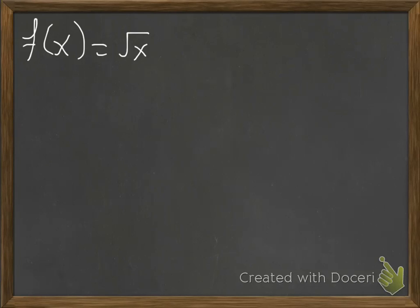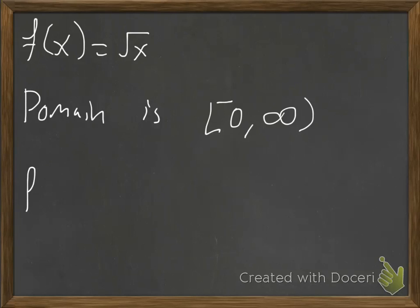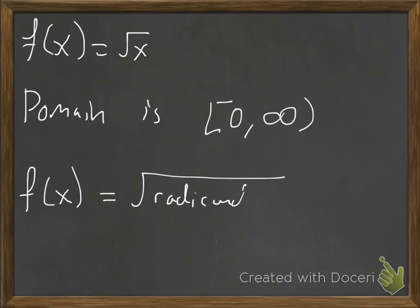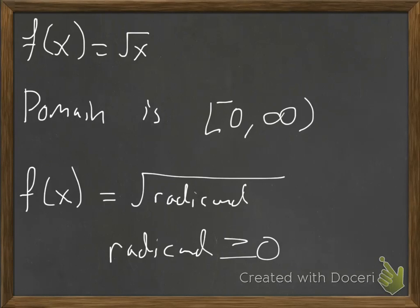For the square root function, square roots don't like negative numbers — they'll spit out an imaginary number, which is not real. So the domain of the parent function is 0 to infinity; any positive number or 0 is fine to plug in. When we have a square root, the expression underneath is called the radicand. To find the domain, we set the radicand greater than or equal to 0, which is an inequality you've been practicing solving.